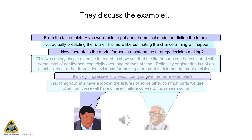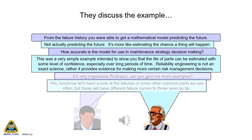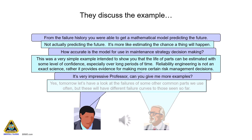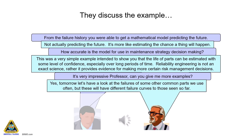How accurate is the model for use in maintenance strategy decision-making? This was a very simple example. Life of parts can be estimated with some level of confidence, especially over long periods of time. Reliability engineering is not an exact science — rather it provides evidence for making more certain risk management decisions. It's very impressive, professor — can you give me more examples? Yes, tomorrow let's have a look at the failures of some other common parts, but these will have different failure curves to those seen so far.